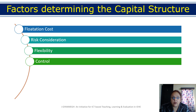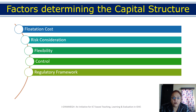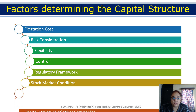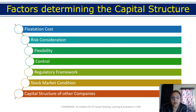Controlling power is another factor. If equity shareholders want to maintain control and participate in company meetings, then we can issue more equities rather than debt. The regulatory framework and stock market conditions also matter — during a boom period, we can issue equities, but during recession or depression, we should only issue debentures. Regarding the capital structure of other companies: while you may observe competitors' capital structures, you cannot blindly follow them, because every company's situation depends on the nature of its work.